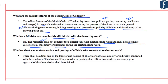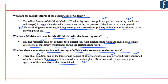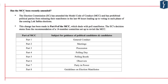On whether the government can make transfers and postings of officials related to election work: there shall be a total ban on transfer and posting of all officers directly or indirectly connected with the conduct of elections. If any transfer is considered necessary, prior approval of the Election Commission must be obtained. At times, the Election Commission itself also transfers certain officials, making it the sole authority to decide transfers in any jurisdiction where elections are to be conducted.